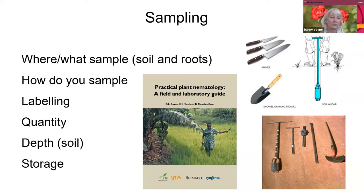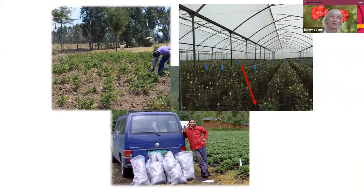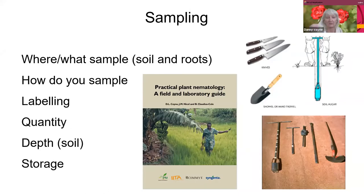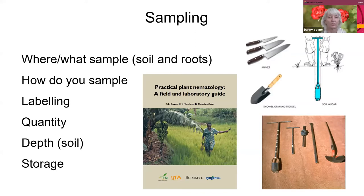So that's important. For example, in a 100 square meter area, you might take 10 subsamples to make one composite sample, and label it very clearly for the nematology lab that will be analyzing it for you. If you are not careful with your labeling, you'll lose your results and it'll be a waste of time.